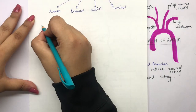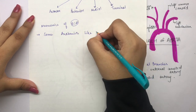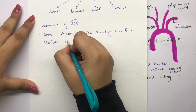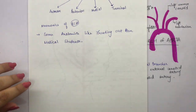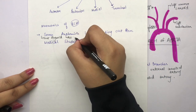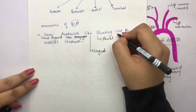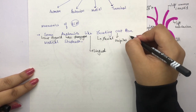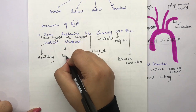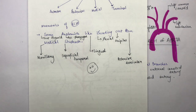Now let's come to the mnemonic for the external carotid artery: 'Some Anatomists Like Freaking Out Poor Medical Students.' S = Superior thyroid (anterior); A = Ascending pharyngeal (medial); L = Lingual (anterior); F = Facial (anterior); O = Occipital (posterior); P = Posterior auricular (posterior); M = Maxillary (terminal); S = Superficial temporal (terminal). Thank you for watching.